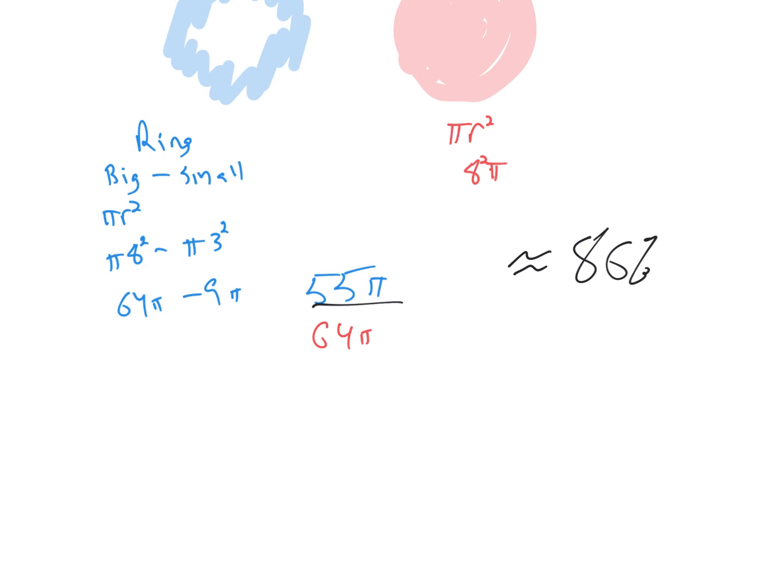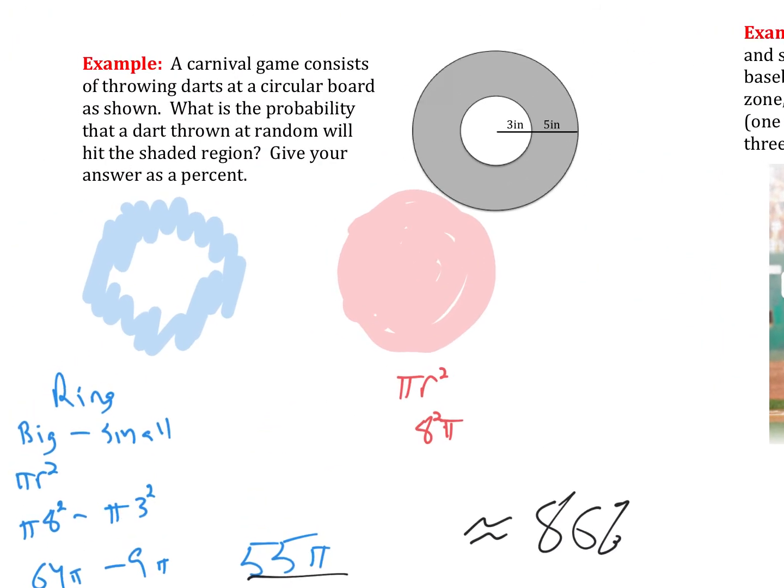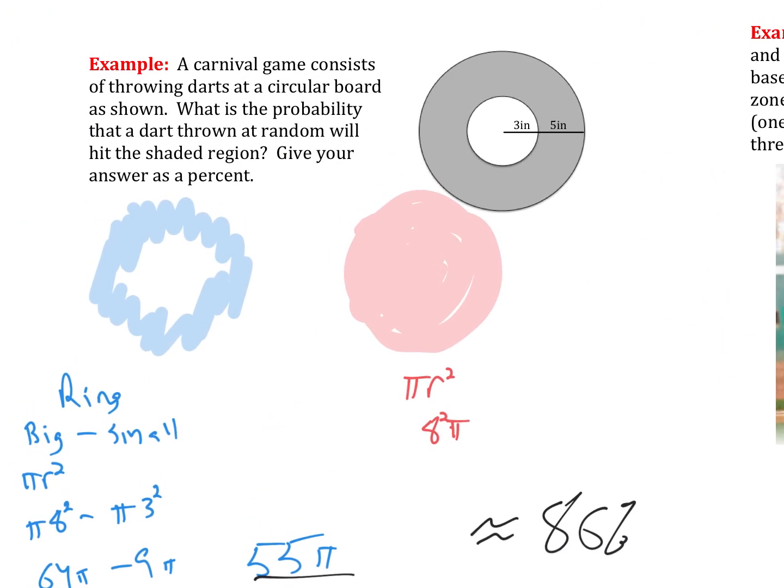And that would be about 86%. So if we were to throw a dart at this dart board, and we're guaranteed to at least hit the board, there's an 86% chance that it would land in that shaded region.